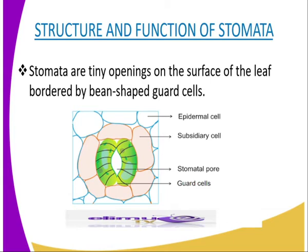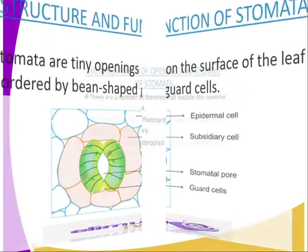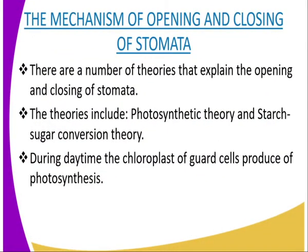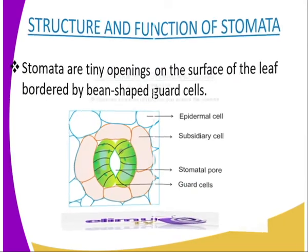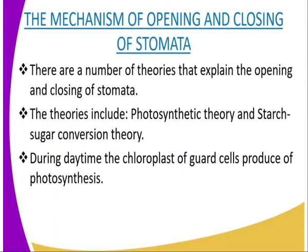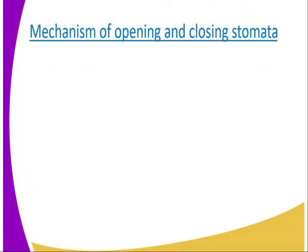When adjacent guard cells become turgid, the stoma opens. Now we are going to look at the mechanism of opening and closing of stomata, because we have said that when the adjacent guard cells become turgid, the stoma opens. So it is important that we look at the mechanism through which the stomata opens and closes. There are a number of theories that explain the opening and closing of stomata.